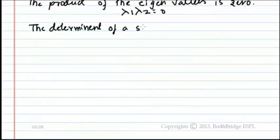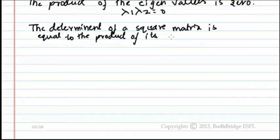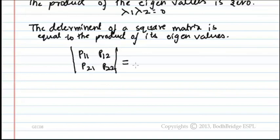We also know that the determinant of a square matrix is equal to the product of its eigenvalues. That is, the determinant of this matrix is equal to the product of eigenvalues, which in this case is 0.